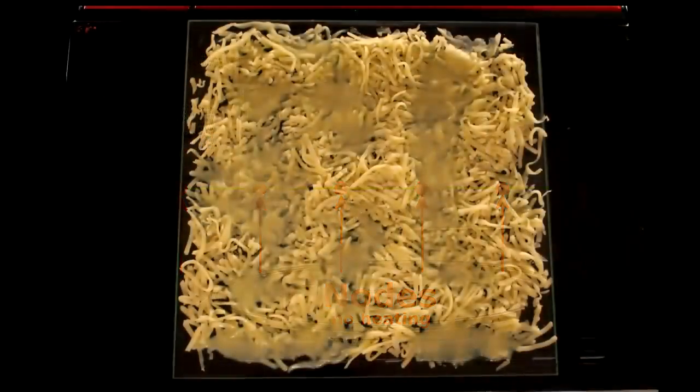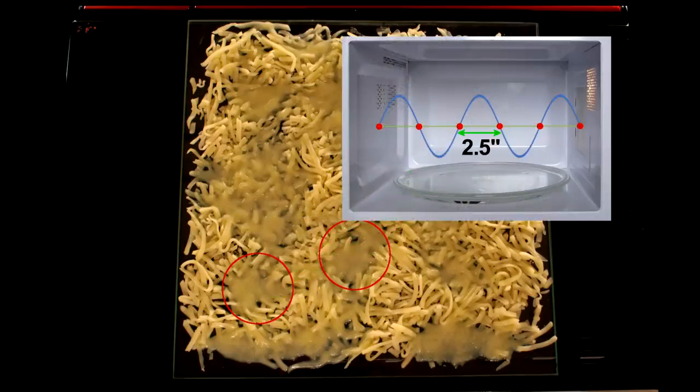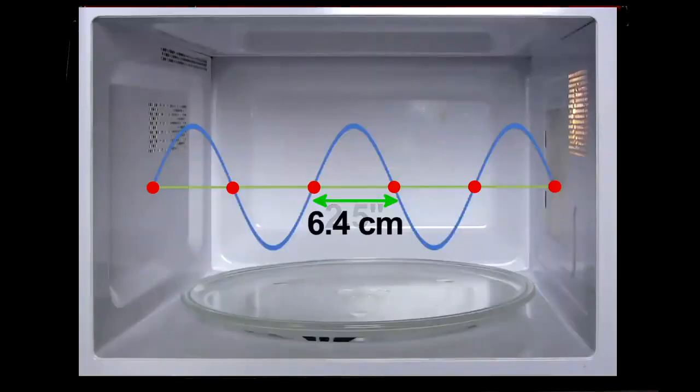If I measure the distance between melted cheese spots, I find about two and a half inches. That would be half the wavelength, the distance between nodes, and is pretty close to the actual wavelength of microwave radiation used.